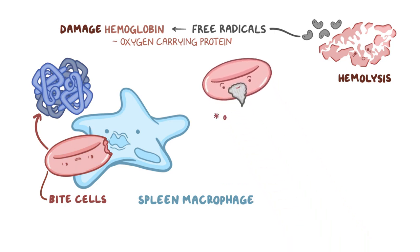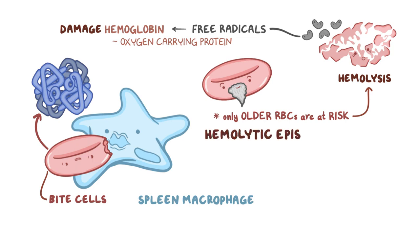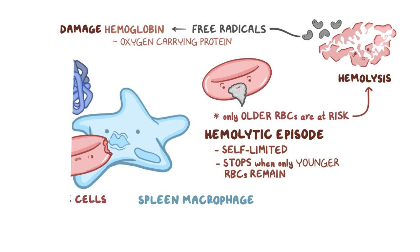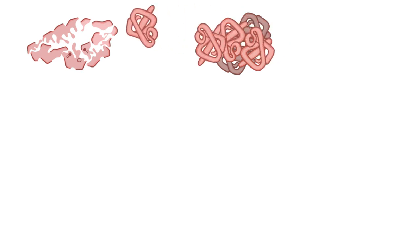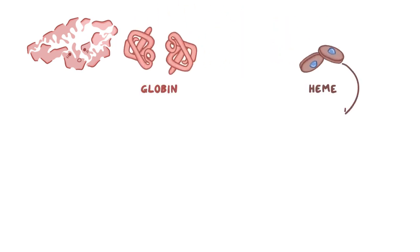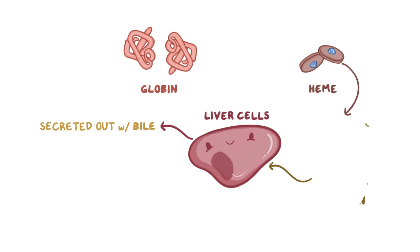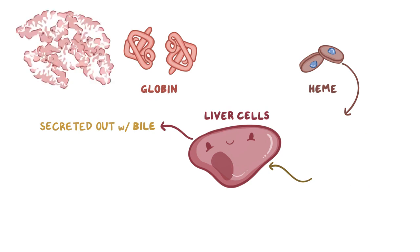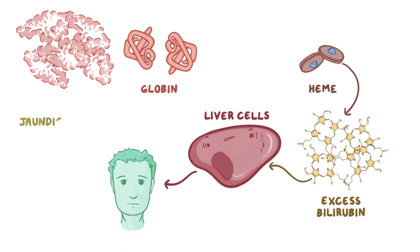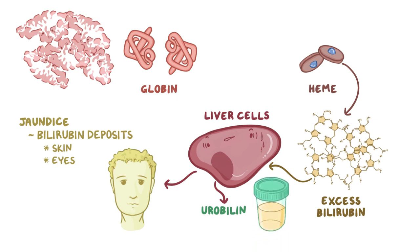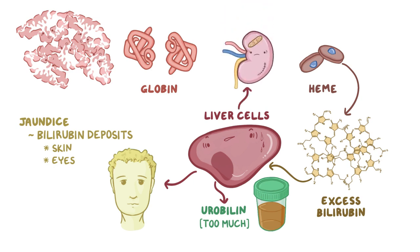The good news is that only older red blood cells are at risk for lysis, and the hemolytic episode is self-limited, as hemolysis stops when only younger red blood cells remain. When a red blood cell dies, its hemoglobin breaks up into globin and heme. Heme is converted into bilirubin, which is then taken up by the liver cells and eventually secreted out with bile. If your body suddenly starts breaking down more red blood cells than the liver cells can handle, the excess bilirubin stays in the blood and causes jaundice, where the bilirubin deposits in the skin and the eyes, causing them to turn yellow. Some of the bilirubin is converted to urobilin, which gives urine that yellow color. If there's too much of it, the urine becomes a much darker, tea-like color, which could overwhelm the kidneys, resulting in kidney damage.